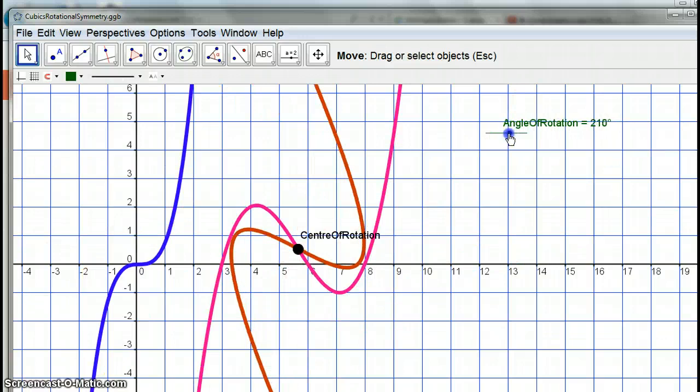So, you can see it mapping onto itself at the 180. So the sort of comment that we want for merit is to say it's a cubic, and all cubics have rotational symmetry. That kind of general statement is moving into the merit land. Okay?